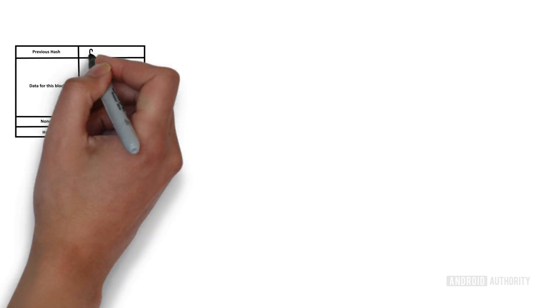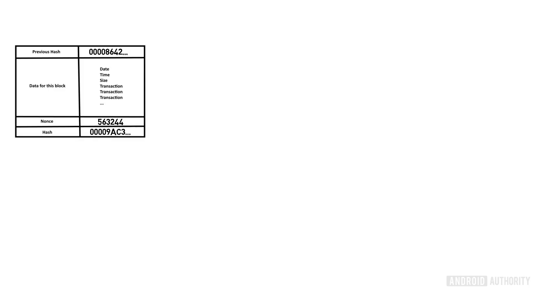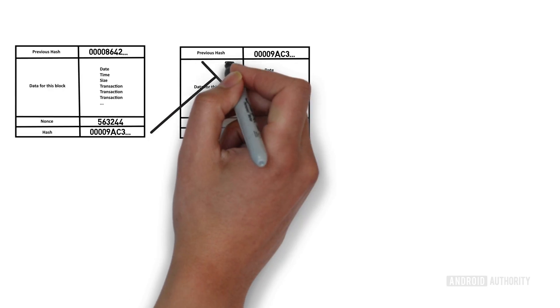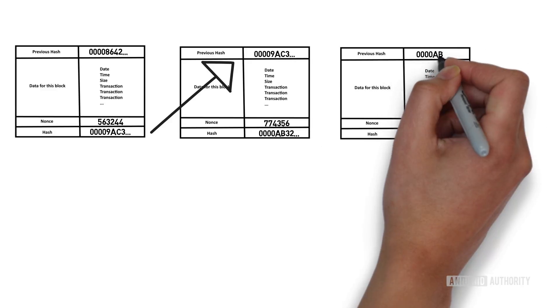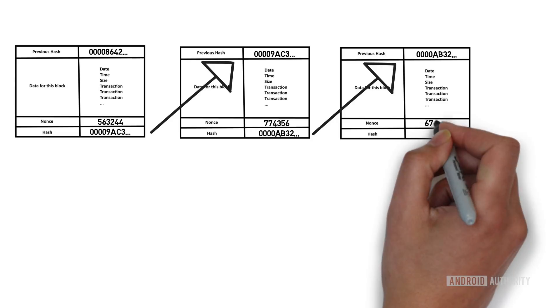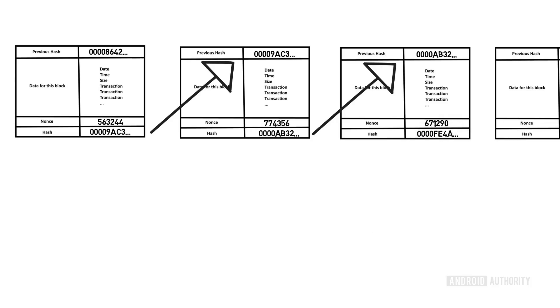What this also means is that if you want to change a block — so remember, even if we just change one bit, let's say I want to change it to say he sent two Bitcoins rather than one Bitcoin — by changing that, it changes the hash. When you look at the next transaction and it says the hash of the block before was this, and you look at the block before, it's different, it's changed. So to actually change any one block inside the blockchain, you have to change the whole chain — even changing a two to a one inside a transaction requires recalculating the entire chain.